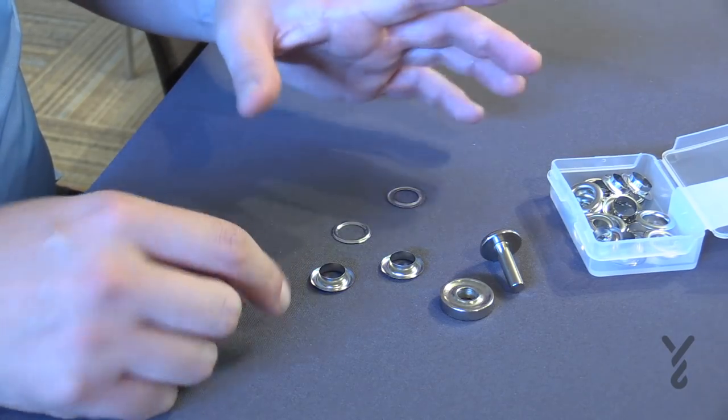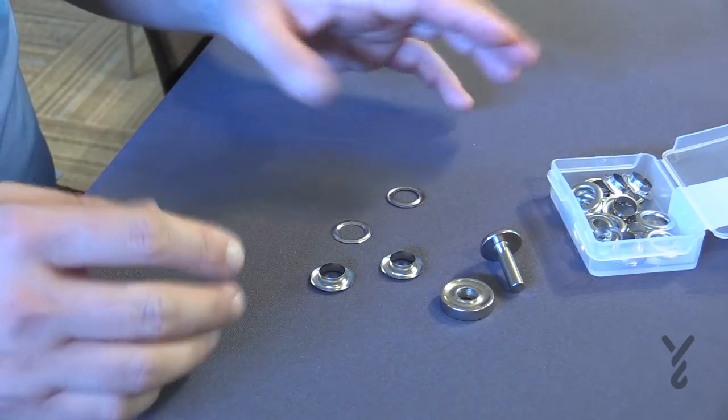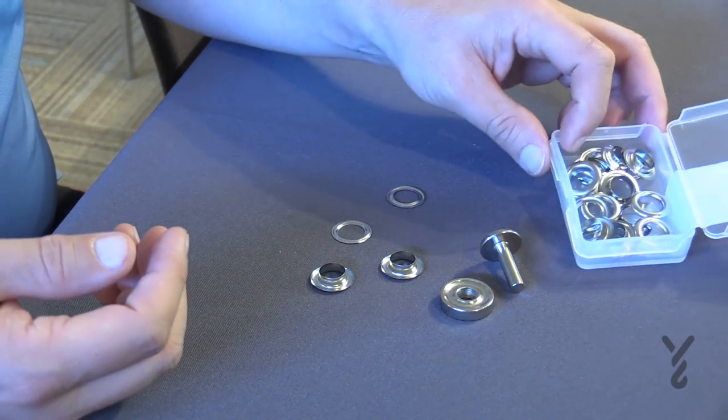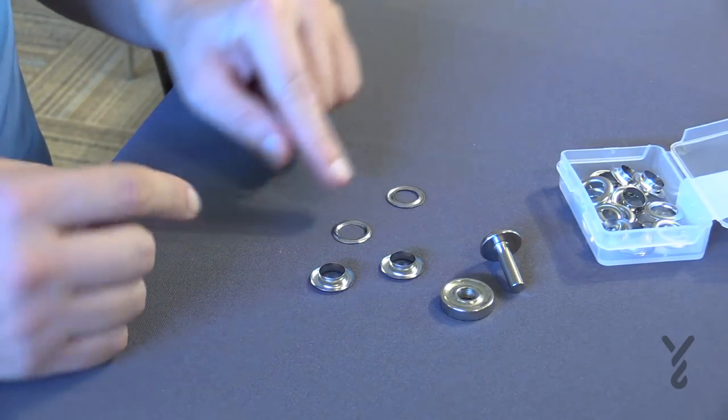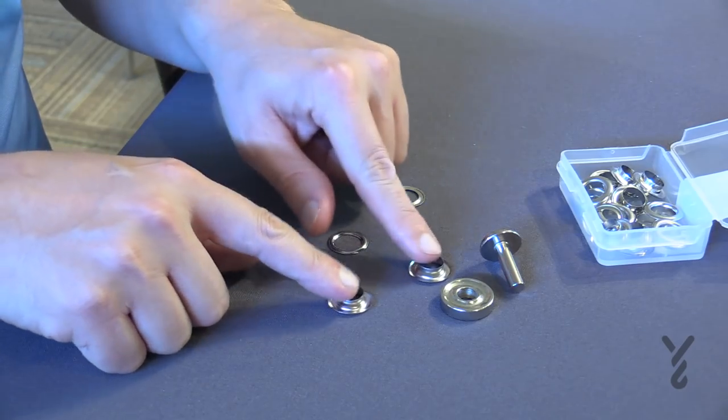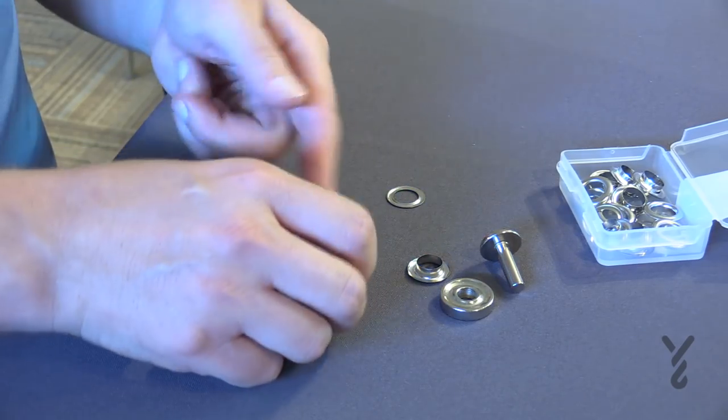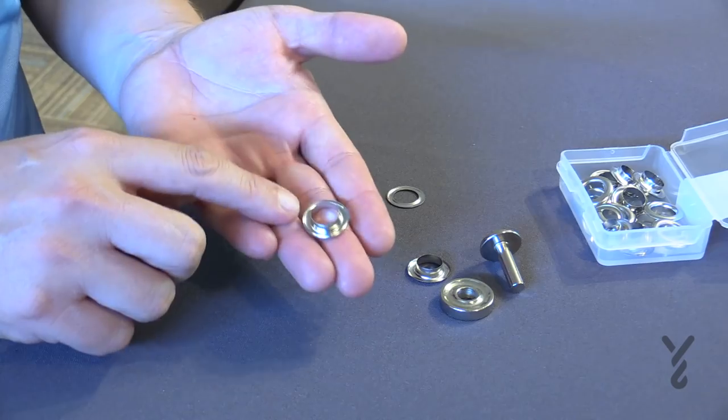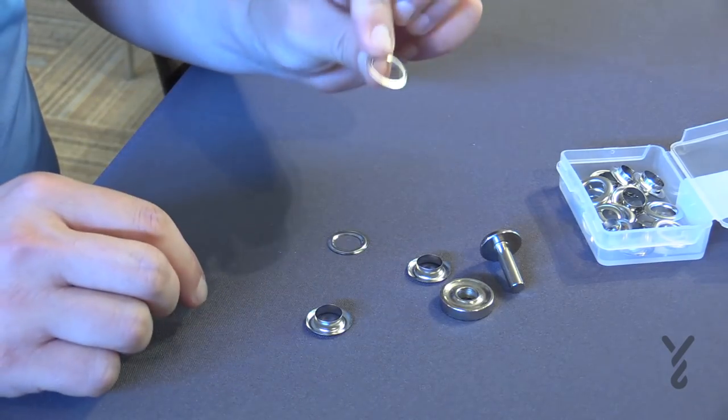Now if you go to Joanne Fabrics and Crafts, usually they have a kit where everything is included for the first time you do it, and then you can buy replacement grommets. There are two types of grommet materials. You'll notice one that has a lip facing up, and the other one is more flat.